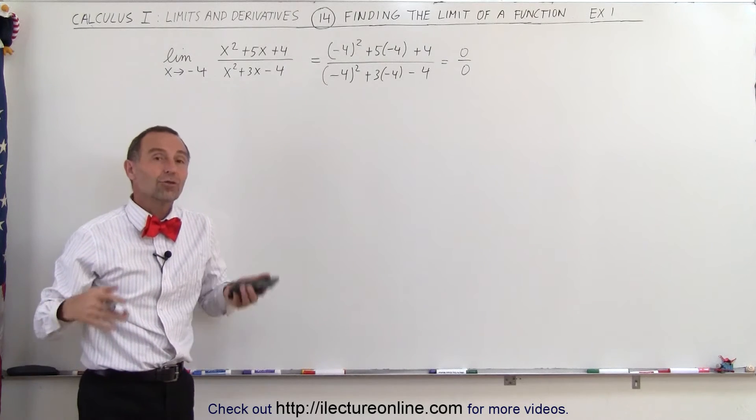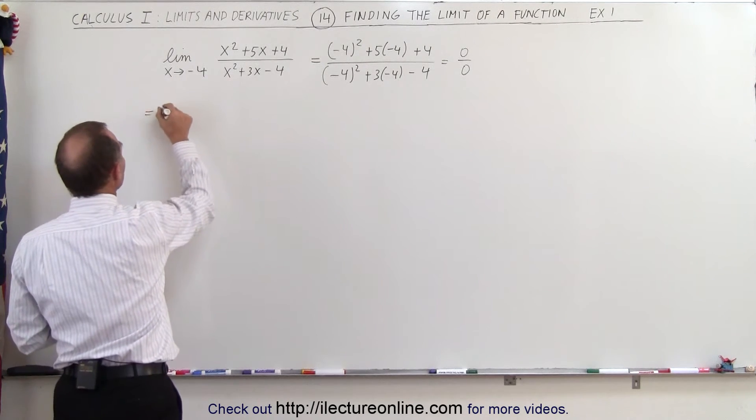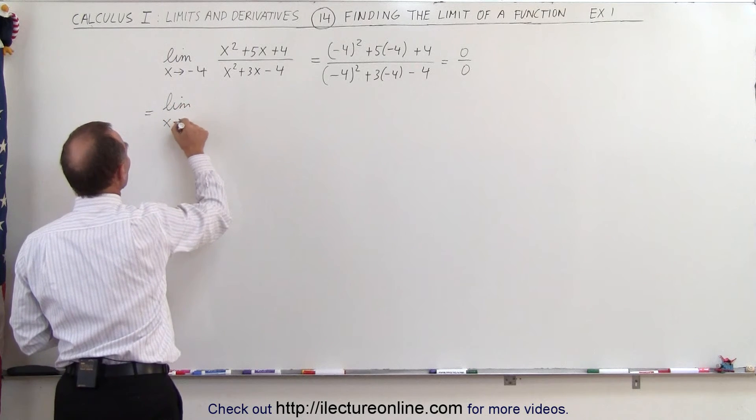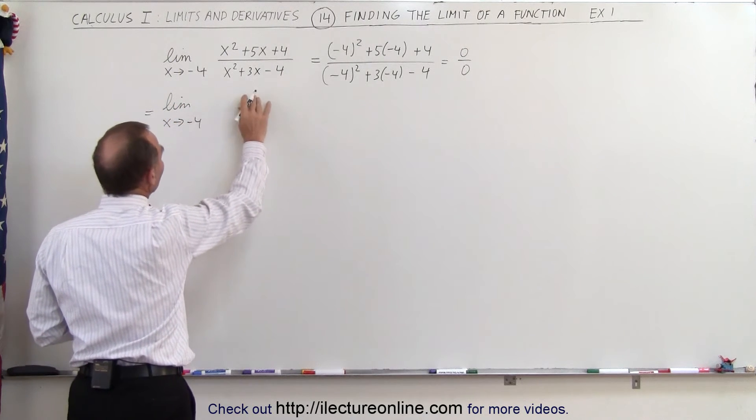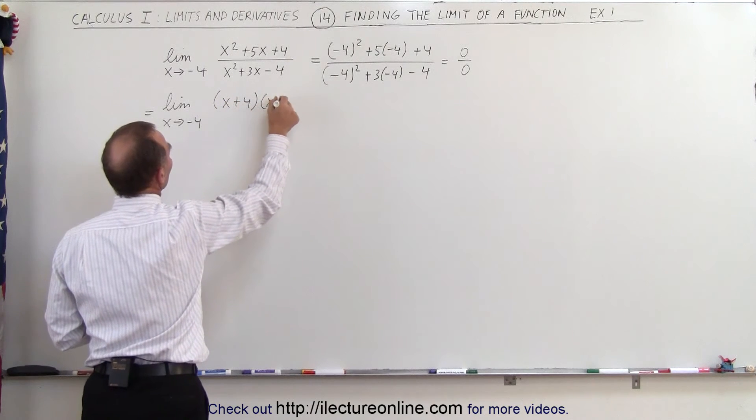At first you would say there's no such thing as a limit to this, but be careful because we can say this is equal to the limit as x approaches -4. When we factor the numerator we get (x + 4)(x + 1).